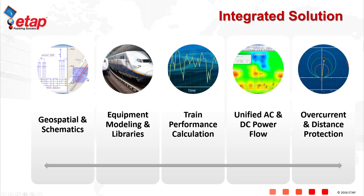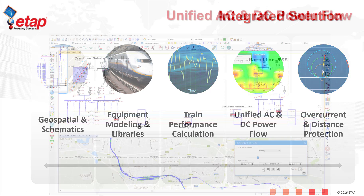eTrax includes geospatial and schematic modeling of railway power systems, rail-specific equipment modeling and engineering libraries, a built-in train performance calculation, unified AC and DC power calculations, as well as embedded overcurrent and distance protection capabilities.